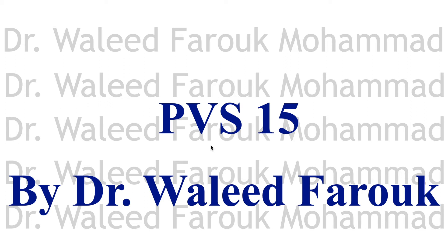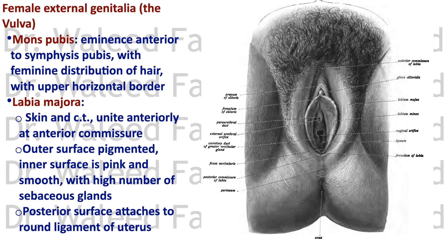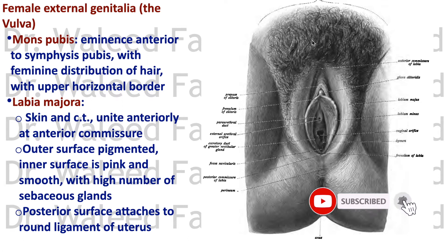Hello and welcome to my channel. In this lecture we will be discussing the female external genitalia. The female external genitalia is called the vulva — it is the whole area. The mons pubis is the hairy part.